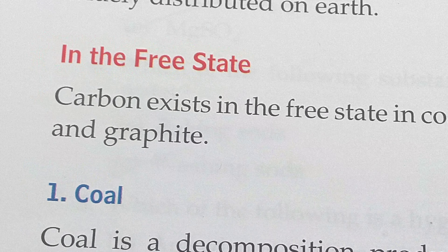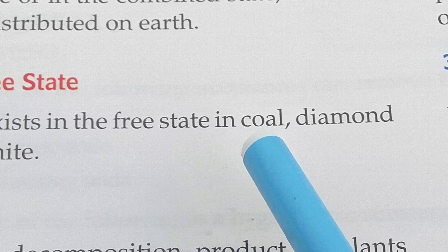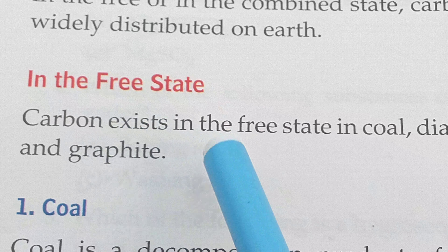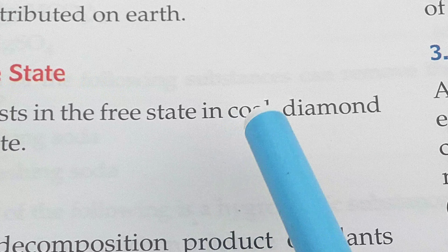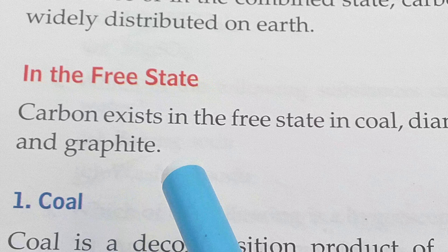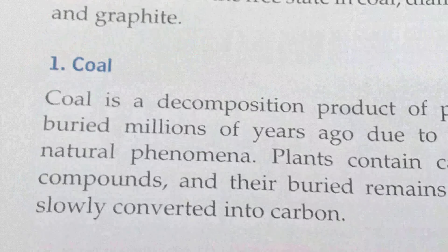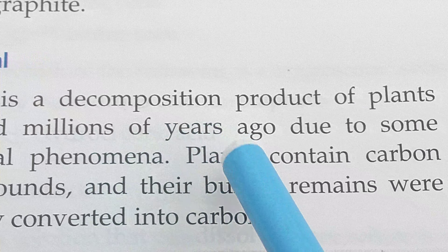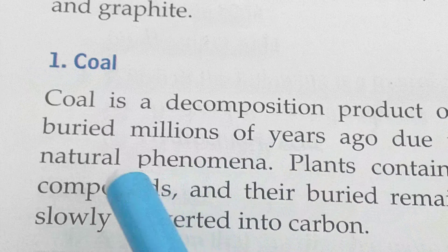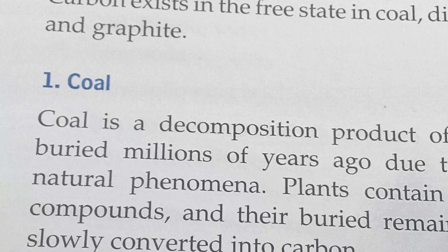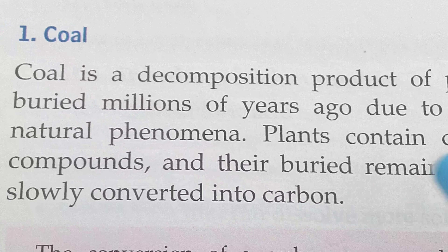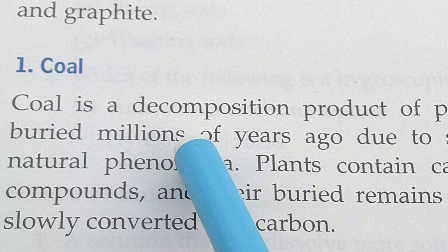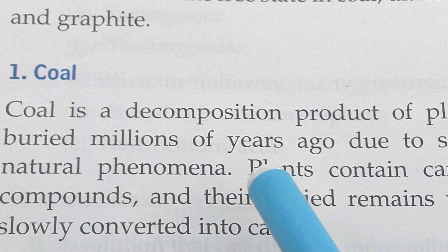In the free state, carbon exists in coal, diamond, and graphite — these are examples where carbon exists in free state. Coal is a decomposition product of plants buried millions of years ago due to some natural phenomena. Plants contain carbon compounds and their buried remains were slowly converted into carbon.